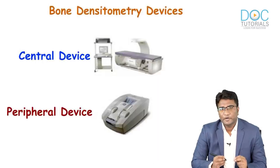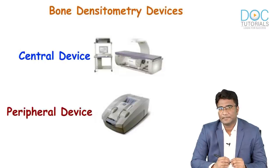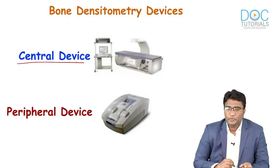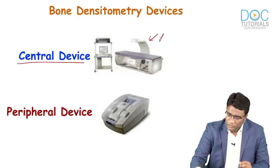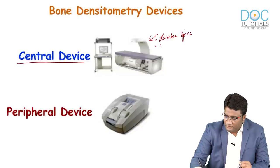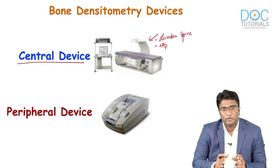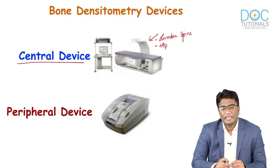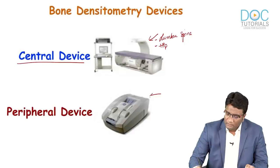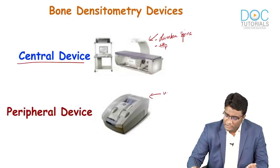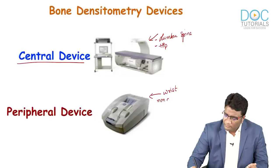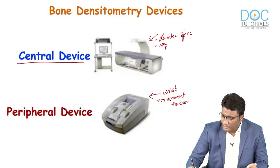During DEXA scan, we have two types of machines: central DEXA devices and peripheral DEXA devices. Central DEXA devices measure bone mineral density from the lumbar spine and the hip or neck of femur. Peripheral DEXA devices are used to look at bone mineral density from the wrist, the non-dominant forearm, or sometimes the heel or calcaneum.